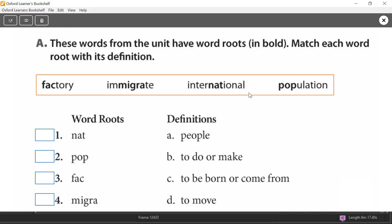Let's look at A. These words from the unit - factory, immigrate, international, population - have word roots in bold. They have the judhur, roots. So factory has a root F-A-C. Immigrate has a root M-I-G-R-A. International has a root N-A-T. And population has the root P-O-P. We have to match each word root with its definition.